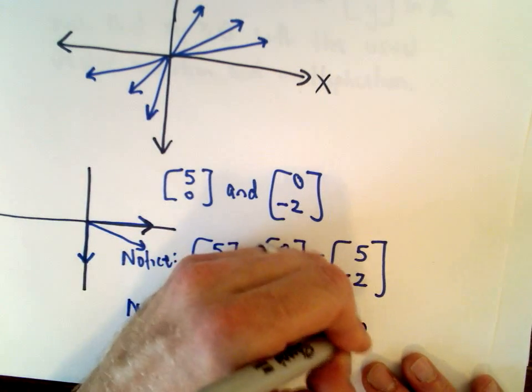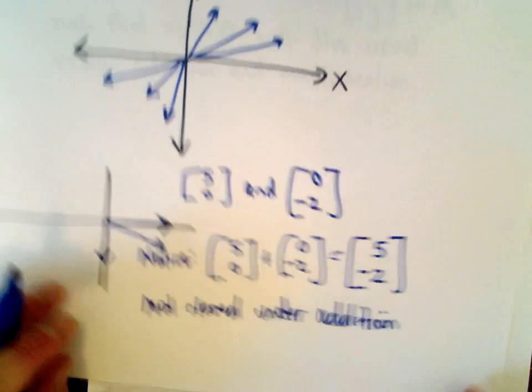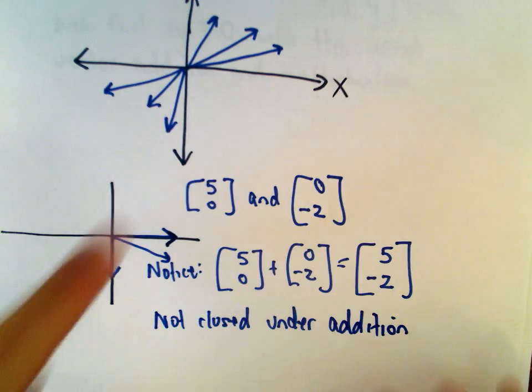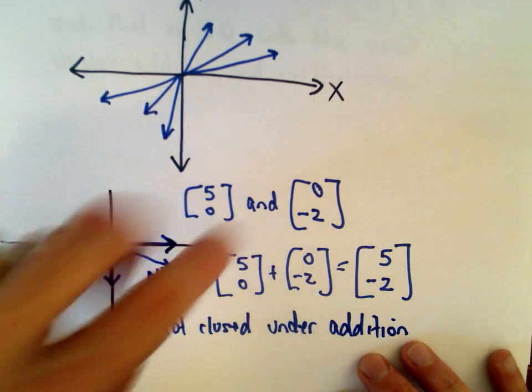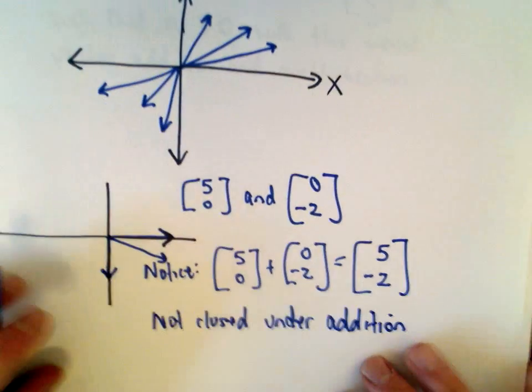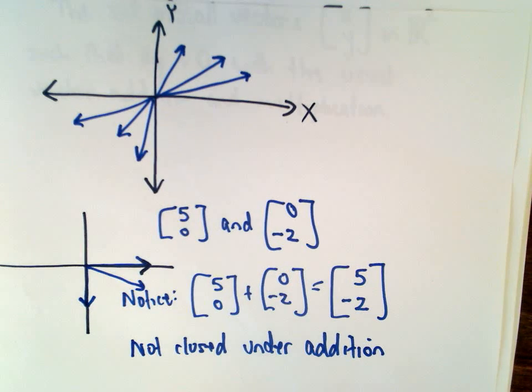Not closed under addition. I didn't even really check the other requirements. I think a lot of the other ones should hold. But it's definitely not closed under addition because, again, it's possible to take vectors from either quadrant 1 or quadrant 3, add them together, and get vectors that are no longer in quadrant 1 or quadrant 3. So no, that's just a quick little counterexample that shows this is not closed under addition and therefore is not a vector space.